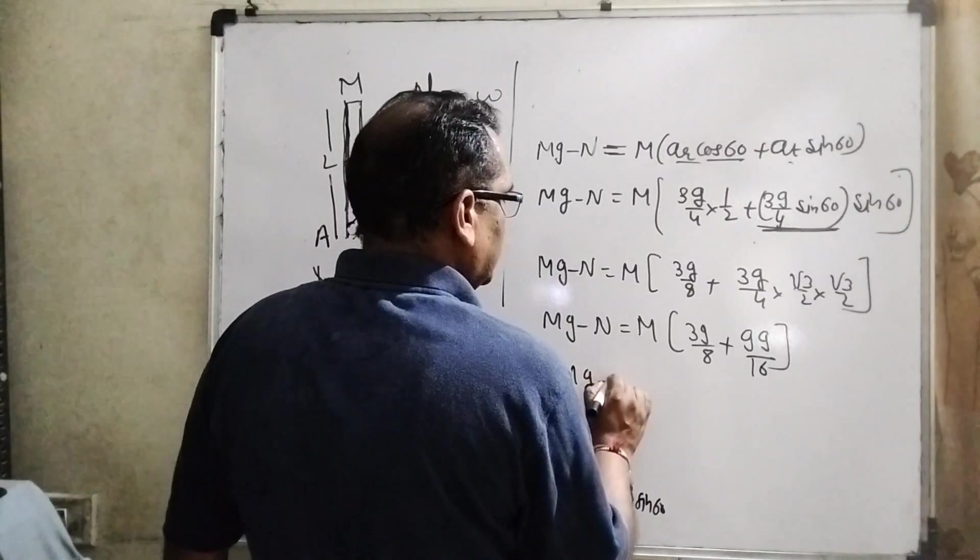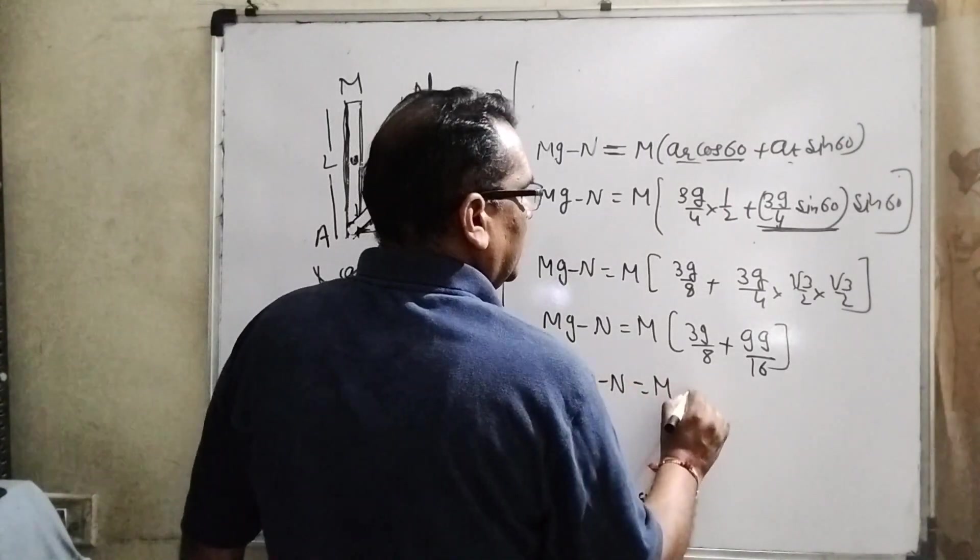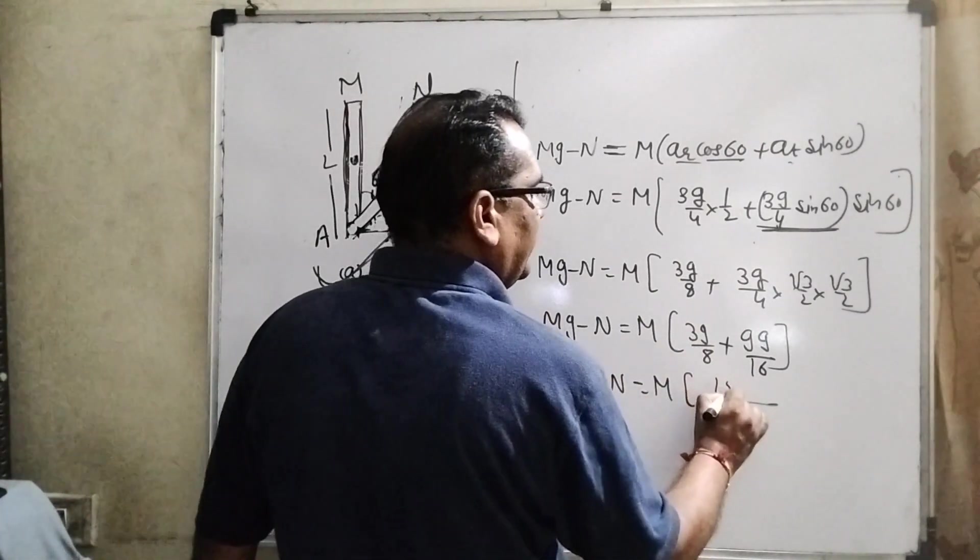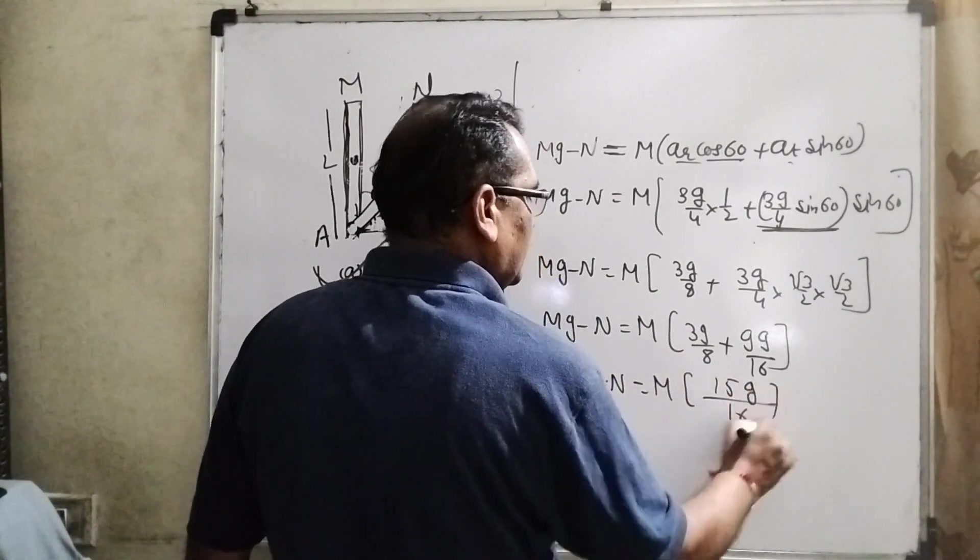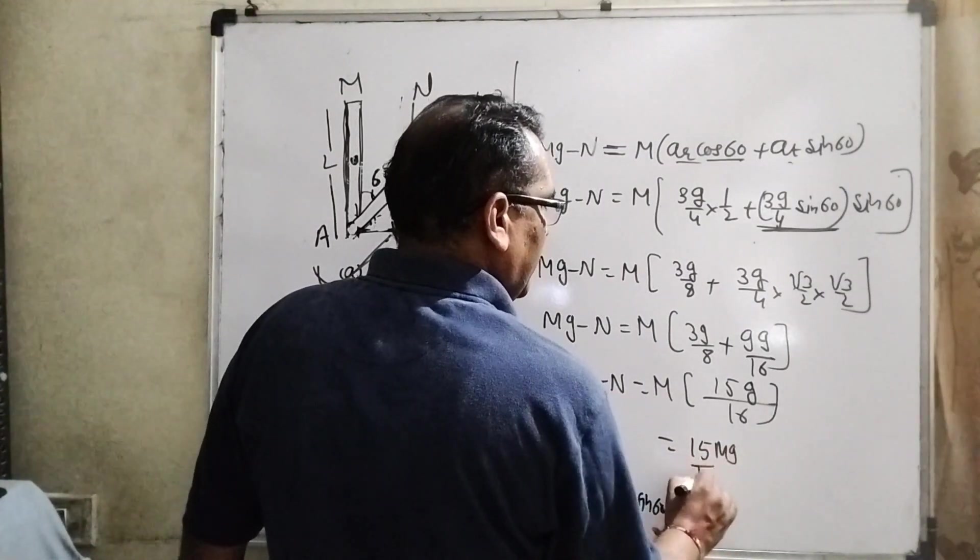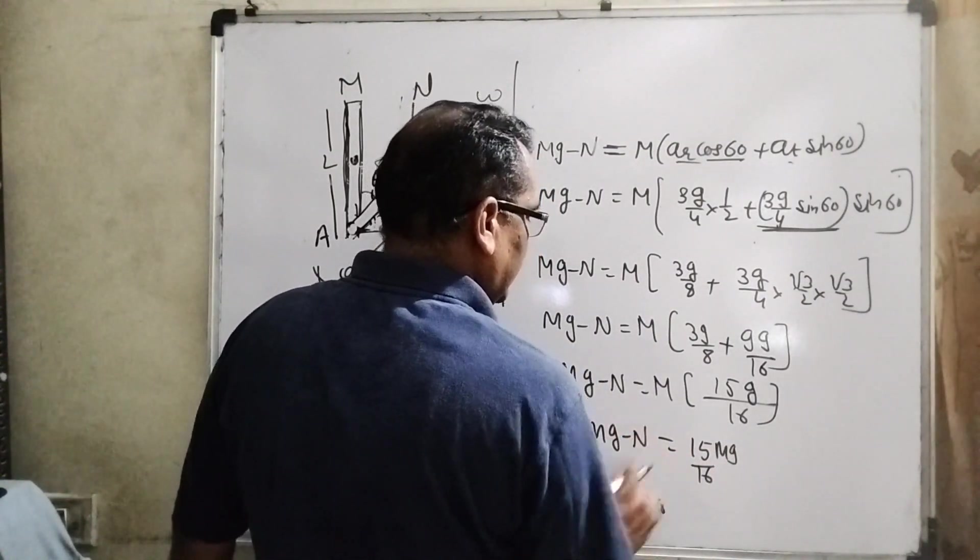M g minus N equal to M, taking the LCM 16, 3 to the 6 and 9, 15g. Then 15 M g by 16. Then 15 M g by 16.